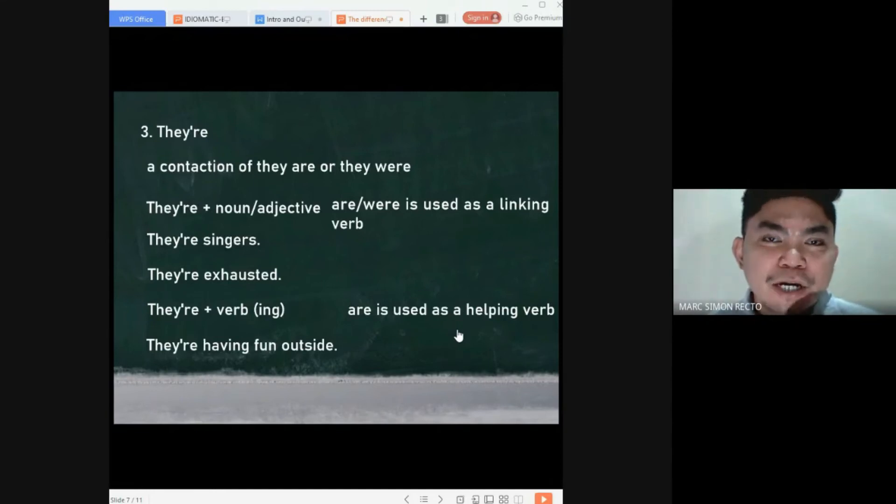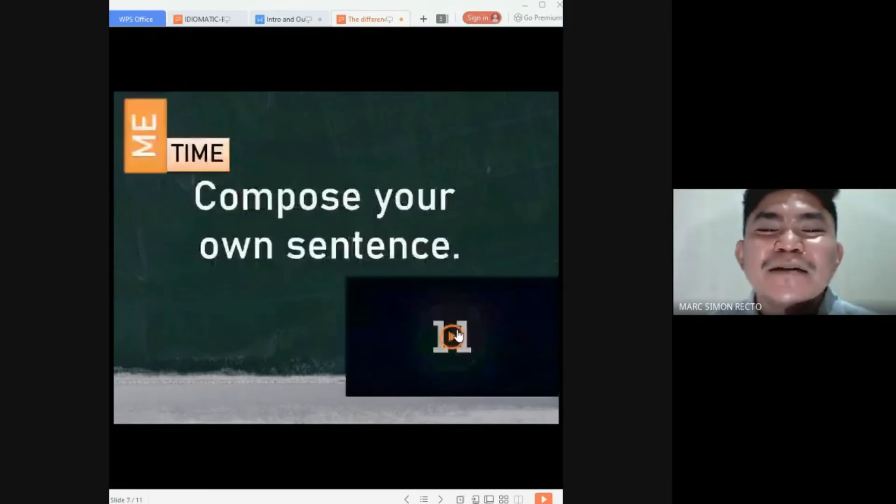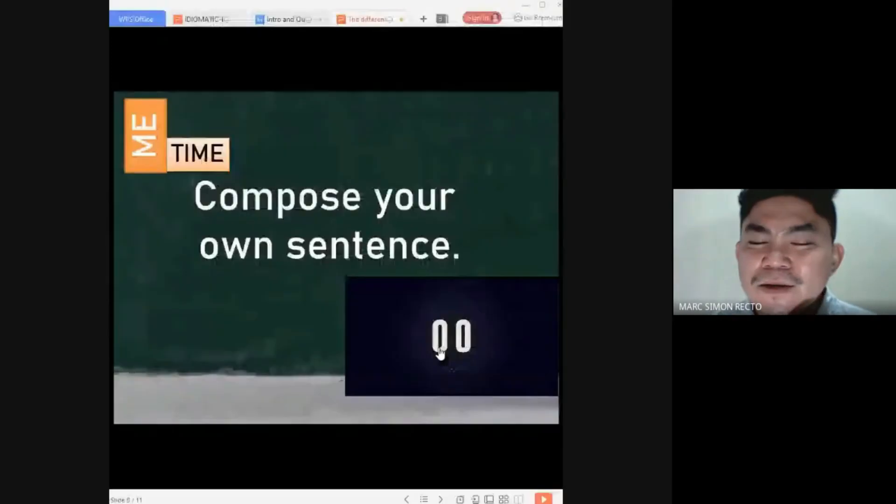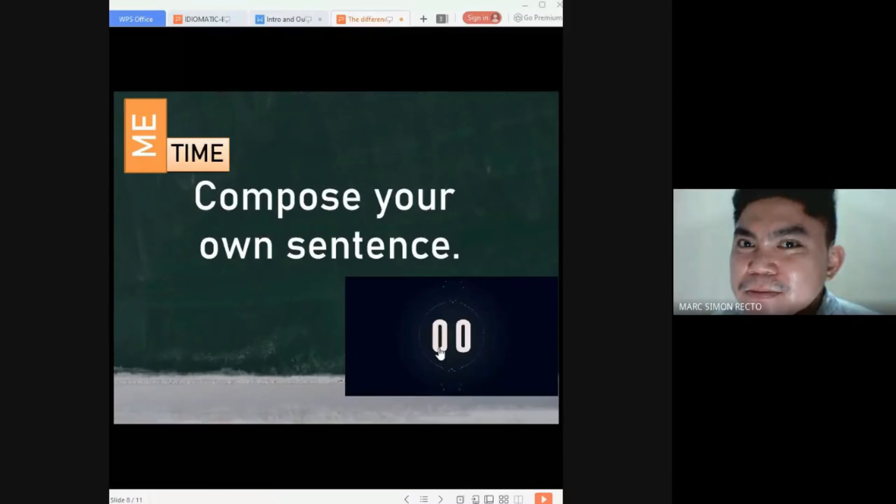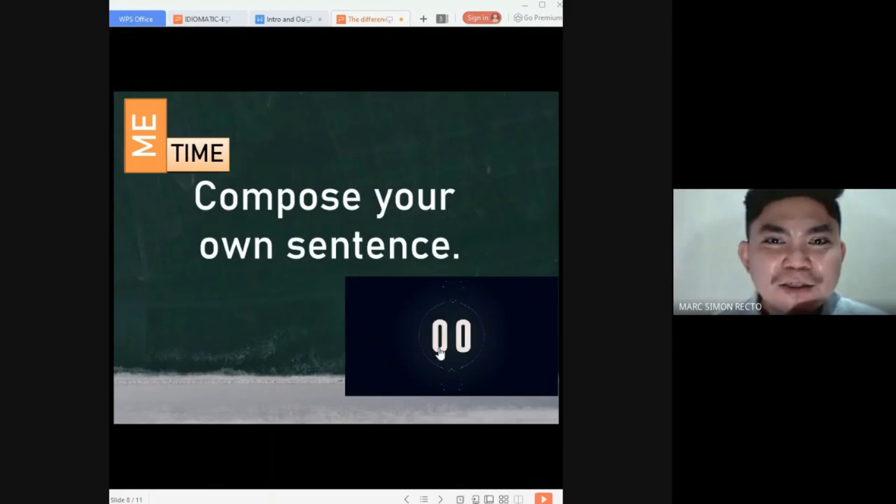The contracted word or contracted version of they are or they were. That has been our last word. Be ready for the me time. Compose your own sentence. I will be giving you another 10 seconds for this activity. Let me hear your sentence now. So, you have there three sentences already. Those sentences will help you understand the uses or the functions of each word easier. Later on, we will be having an activity which you can use also those sentences as a reference.